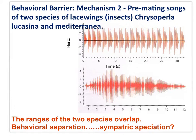Behavioral isolation is the second mechanism by which sympatric speciation could occur. Here we have two graphs showing recordings of two species of lacewing insects that live in the same geographic area. Speciation has occurred due to differences in their song — their behavior. If one population has a behavior not recognized or not preferred compared to another population in the same region, sympatric speciation may occur.